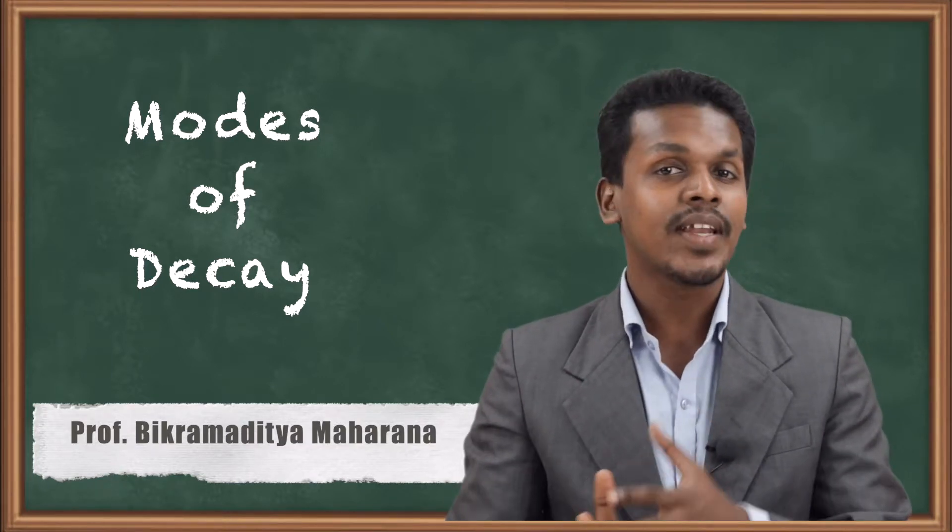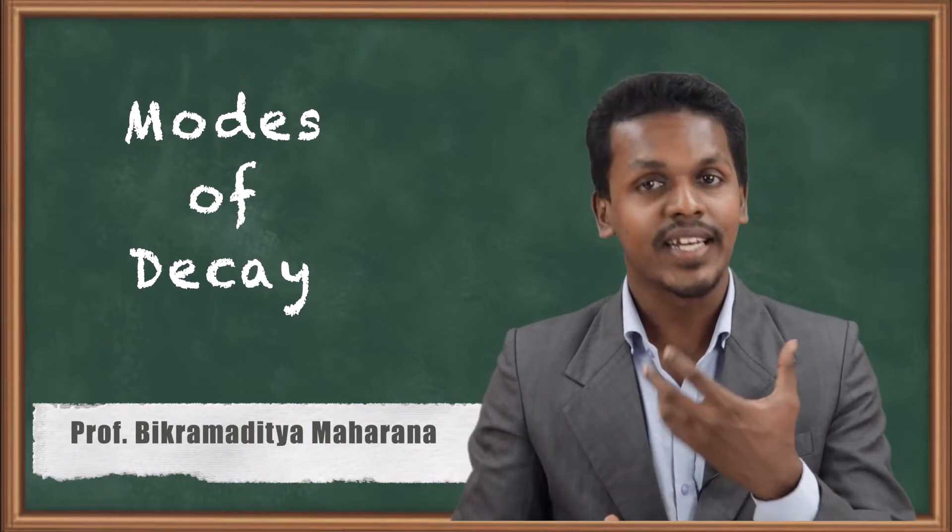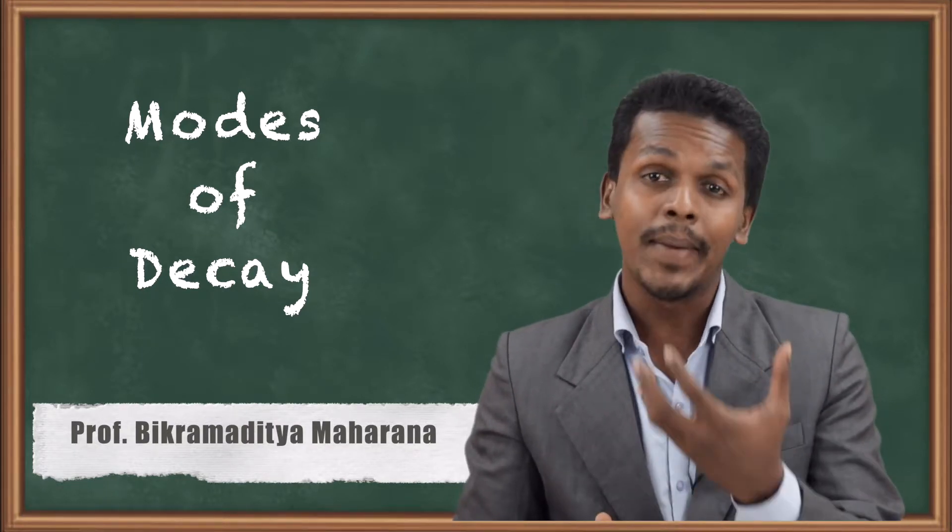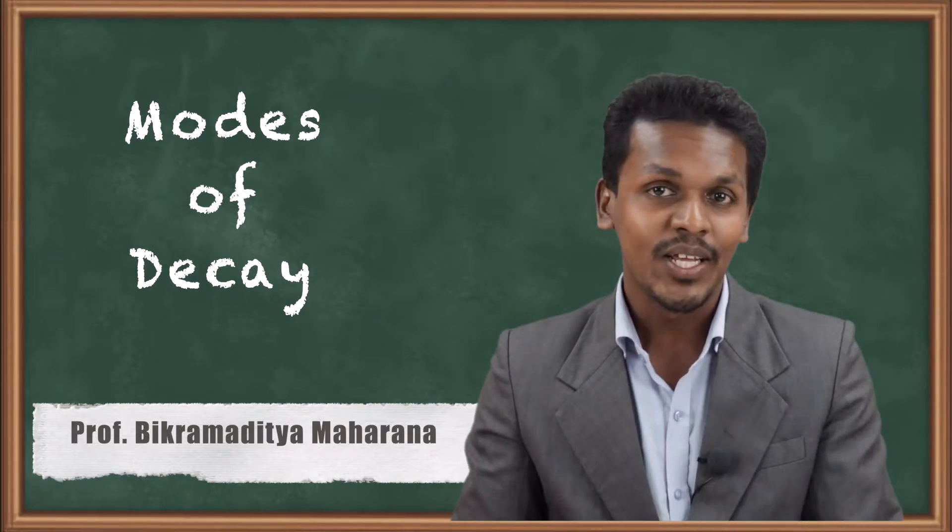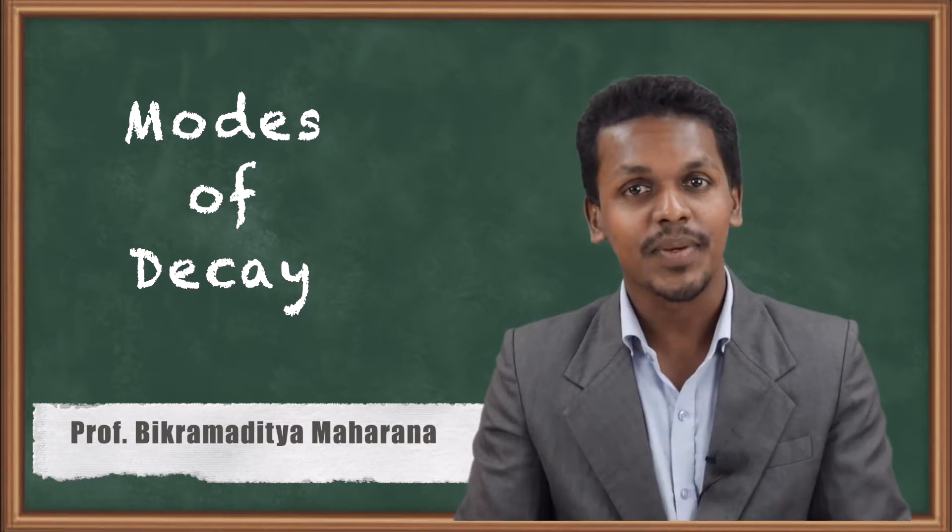We understand that whenever a radioisotope or radioactive element emits radiation, it will emit radiation in the form of a particle. So what are those particles and what is this decay called? Let me talk about that in this topic.